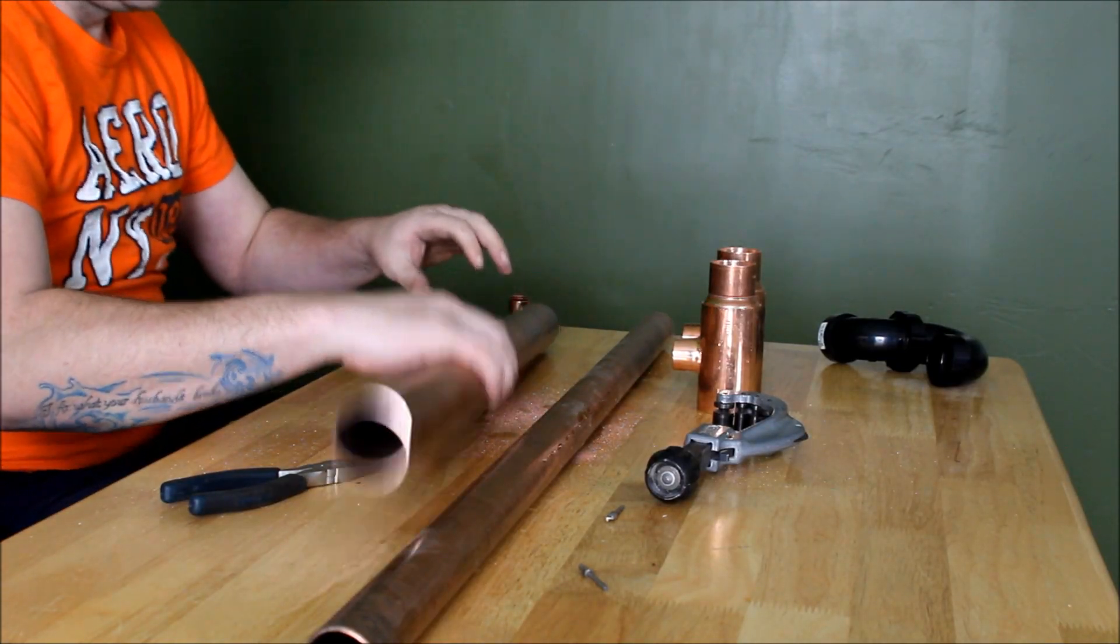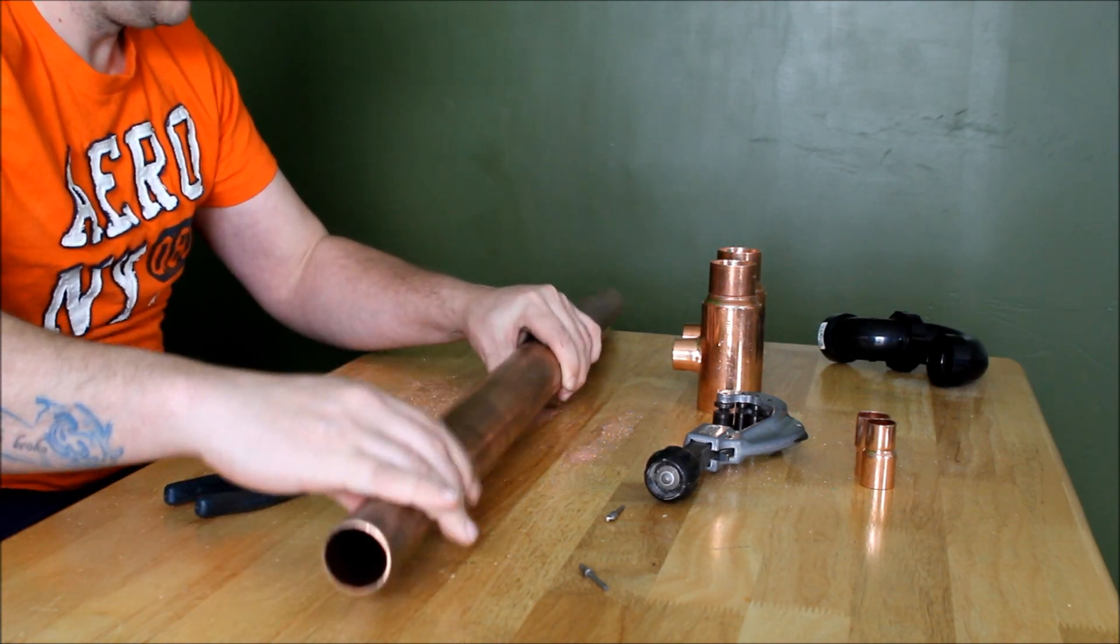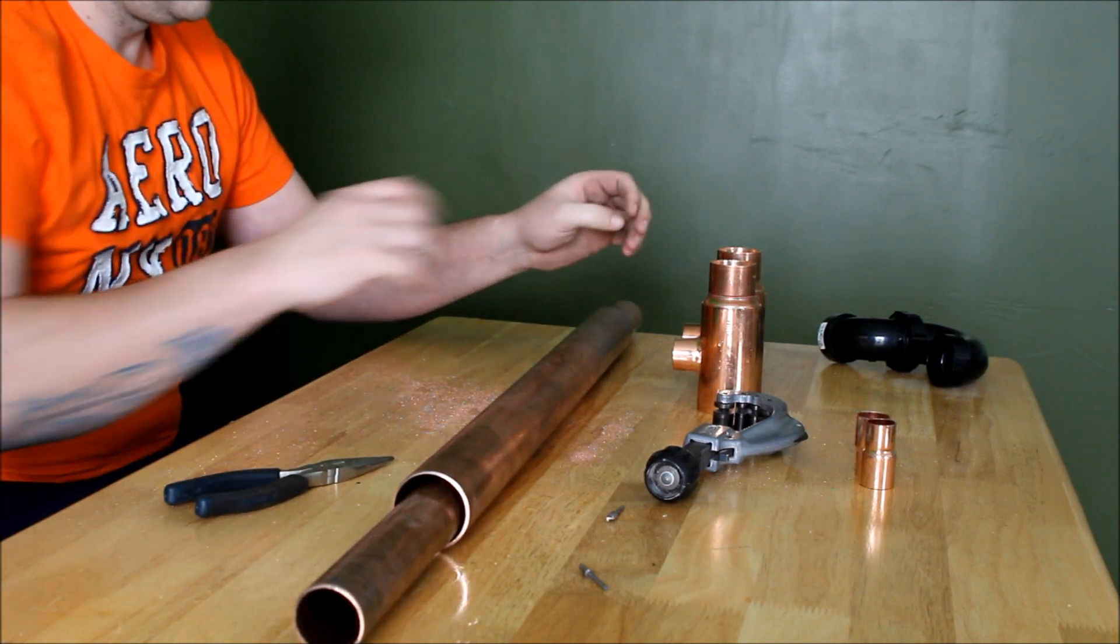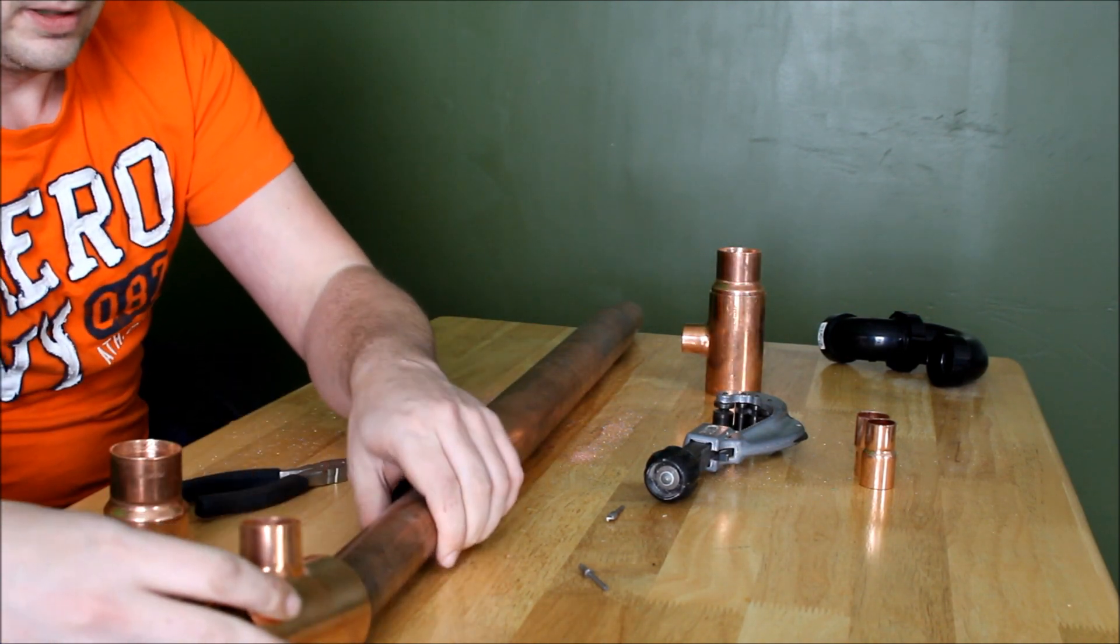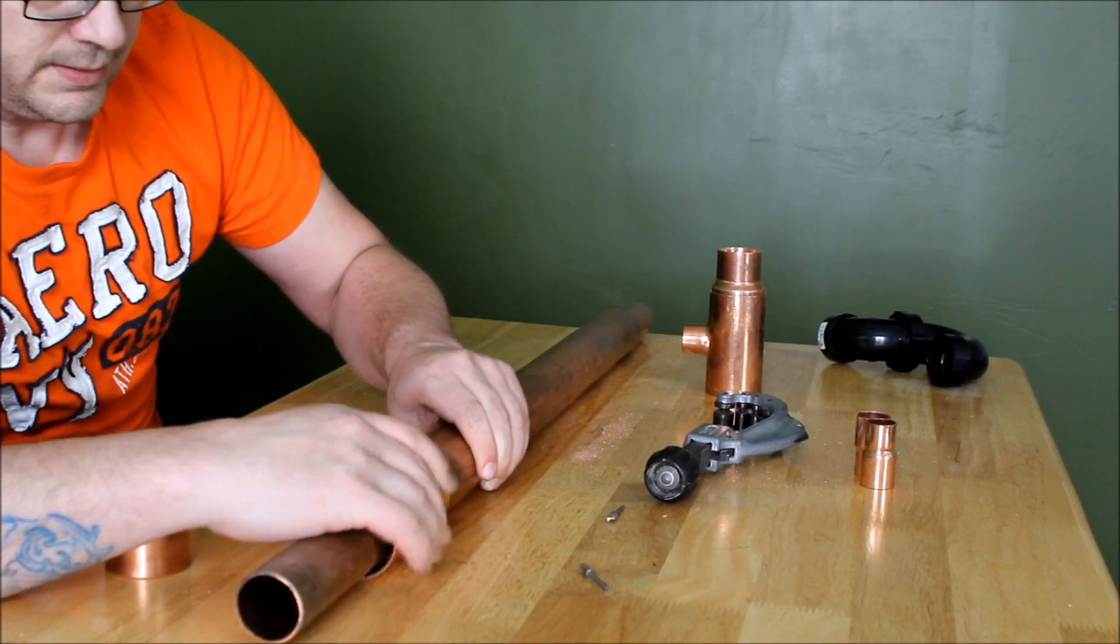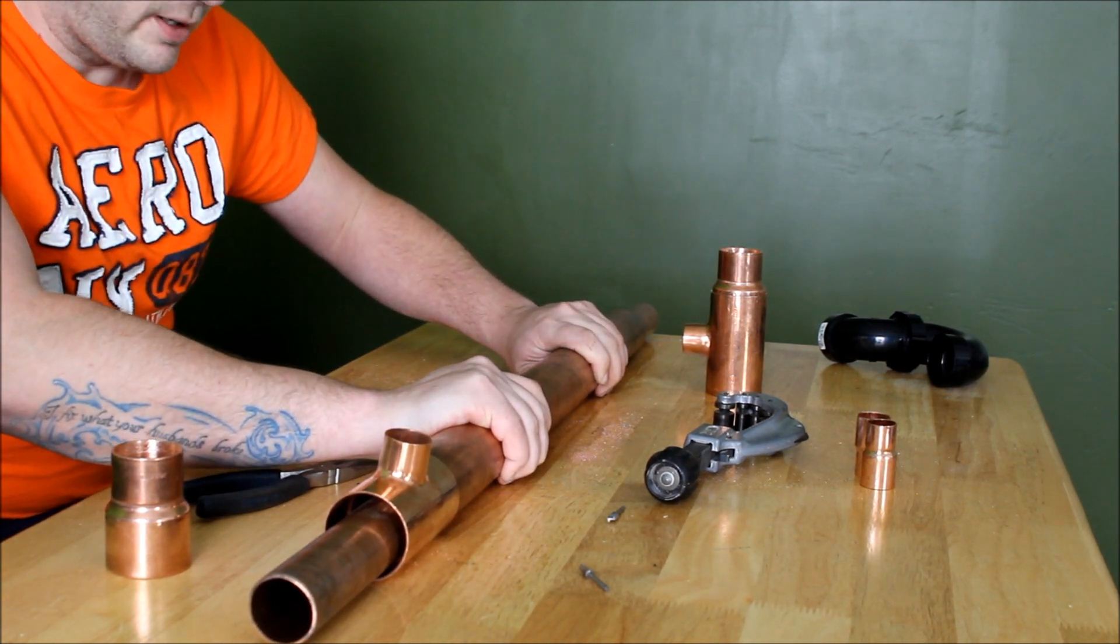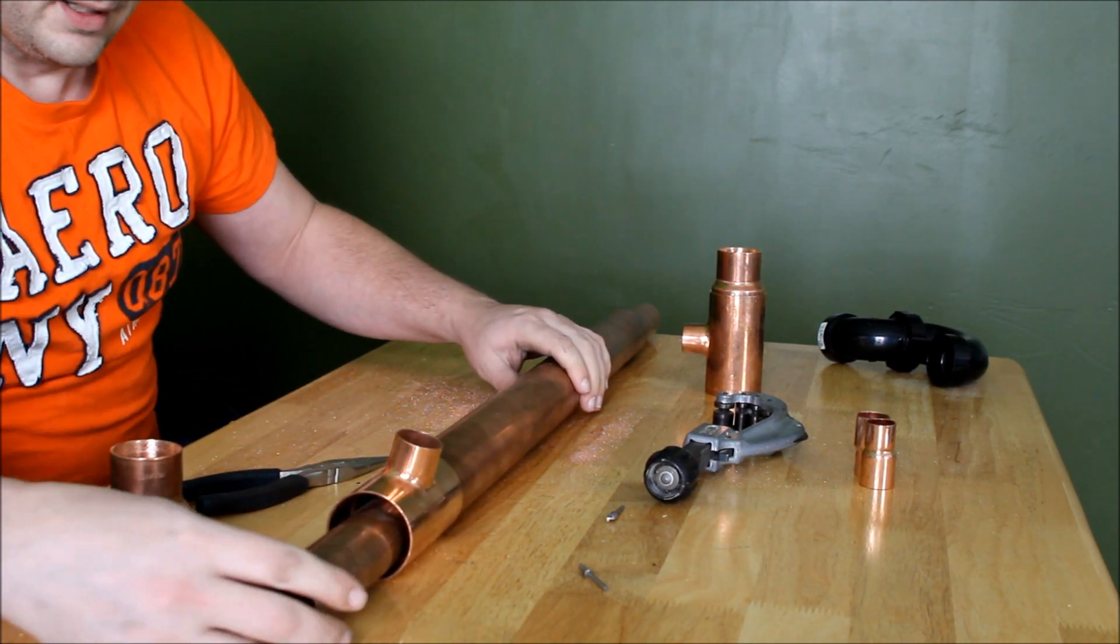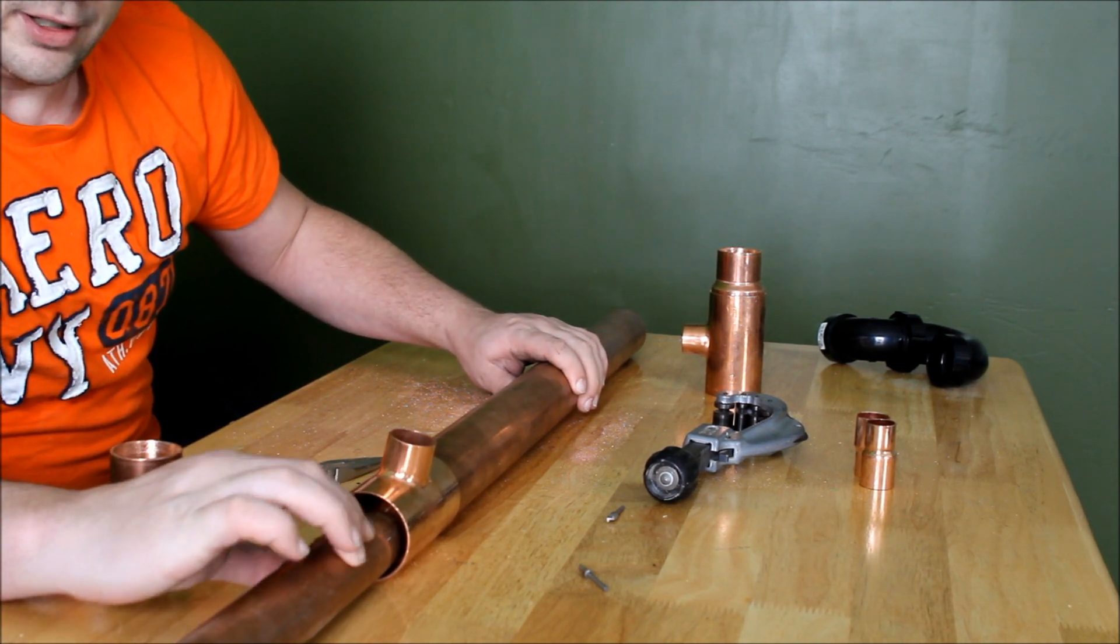First you slide your two inch over the inch and a half. Now slide your T over top. Now this is basically what we're doing. This two inch is going to be the outer casing of the chamber. This is your surface area. This pipe is actually going to be your drain.